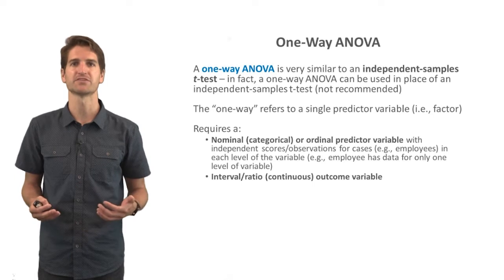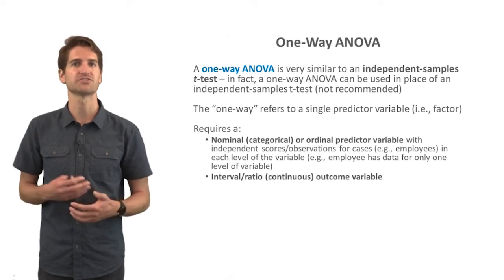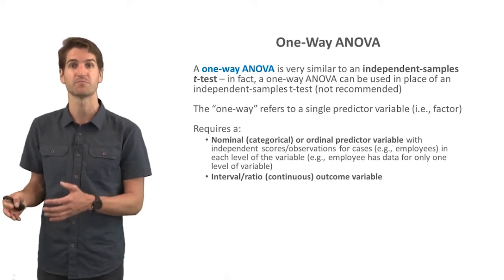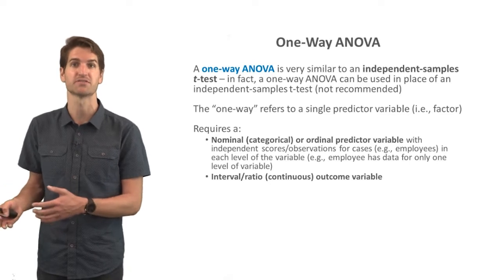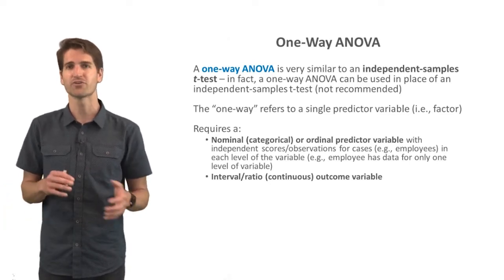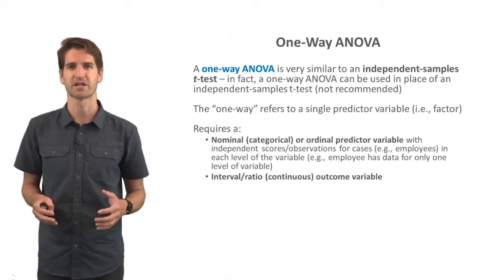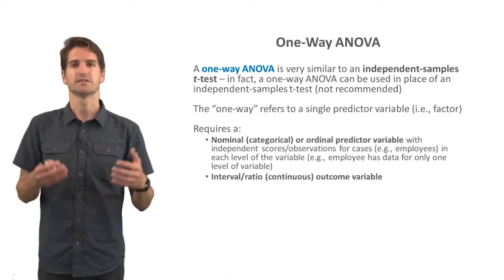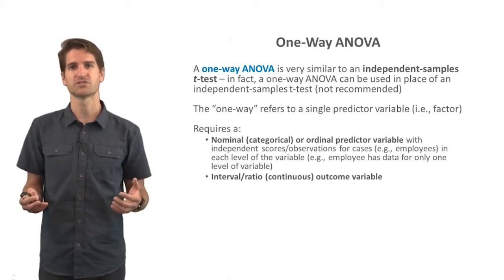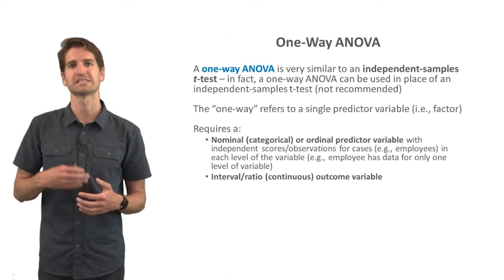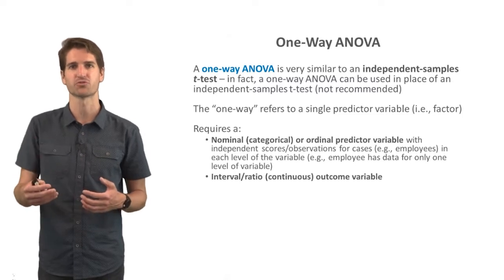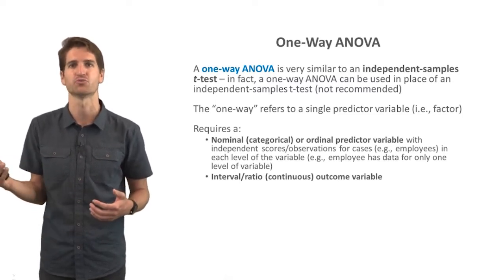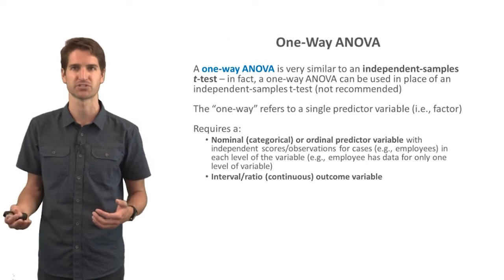A one-way analysis of variance is very similar to an independent samples t-test. In fact, a one-way ANOVA can be used in place of an independent samples t-test. However, I don't necessarily recommend this, and the reason is from an interpretation standpoint — yes, you can get to the same result, but there are different layers of interpretation added when doing a one-way ANOVA compared to an independent samples t-test.